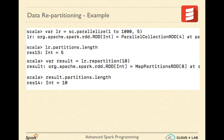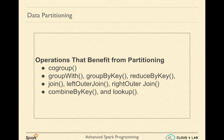You can repartition an RDD at any point of time using the repartition method, which accepts an integer argument specifying the new number of partitions. Most operations that involve a lookup benefit from partitioning — such operations become faster if the RDD is partitioned based on the same key being looked up. Examples of such operations are: coGroup, groupWith, groupByKey, reduceByKey, join, leftOuterJoin, rightOuterJoin, combineByKey, and lookup.